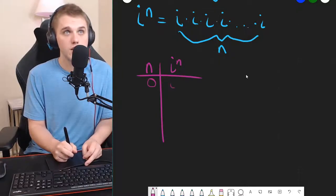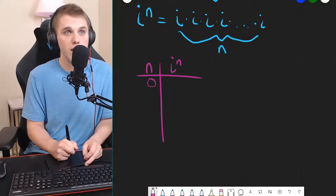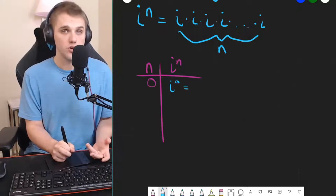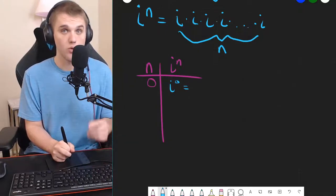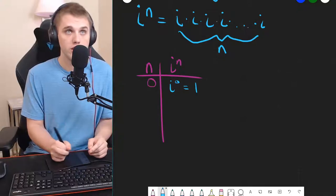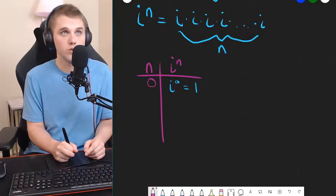Zero. What is i to the zeroth power? Well, anything raised to the zeroth power, any complex number raised to the zeroth power, is 1.